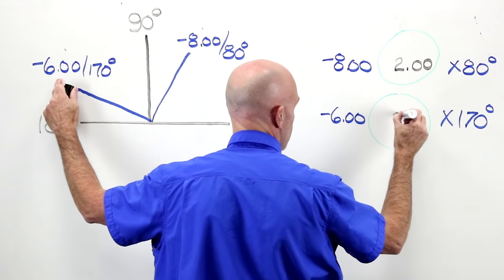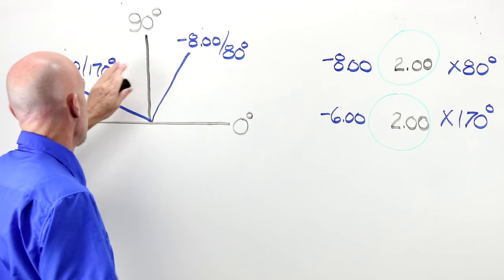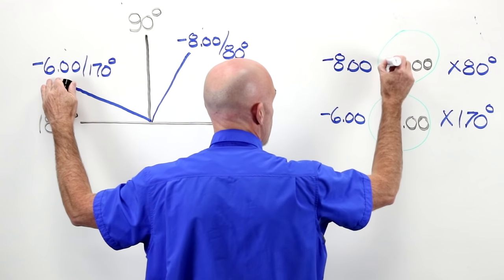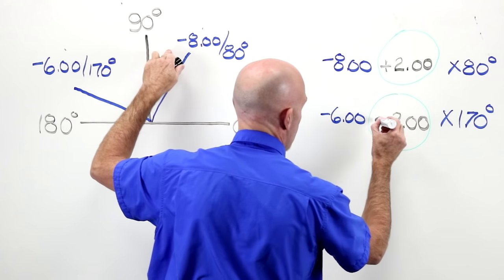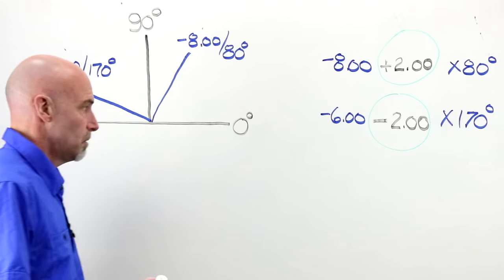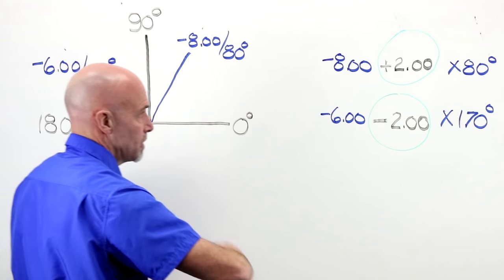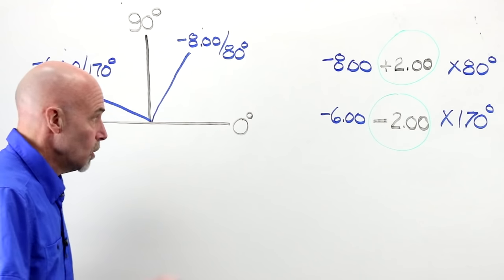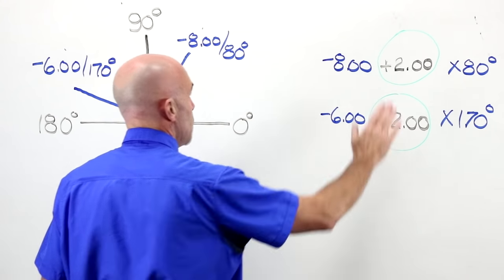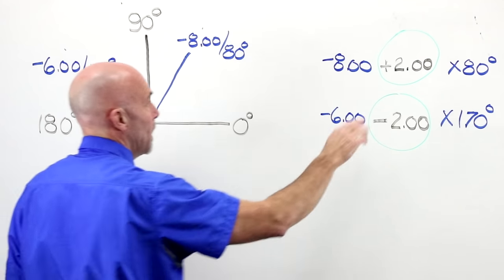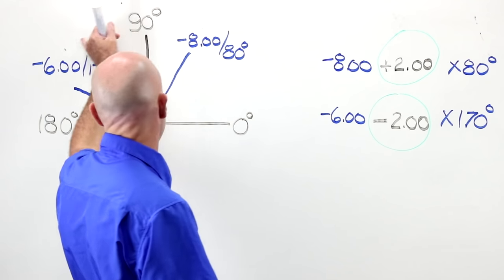If I'm at minus eight, and I go eight, seven, six, I am moving two diopters. If I go from six, seven, eight, I'm moving two diopters. If I go from minus eight to minus six, I am moving in a plus direction. If I go from six to eight, I am in a minus direction. That is how I take the powers on an optical cross and rewrite them as a script.